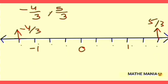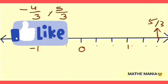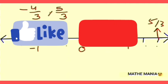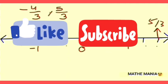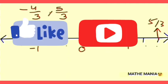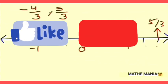Now you can visualize that there are infinitely many rational numbers on the number line and we can easily locate their positions using this method. If you enjoyed learning this method and want more informative videos, please like and subscribe. You can also comment in the comment section if you want a video on any particular topic.